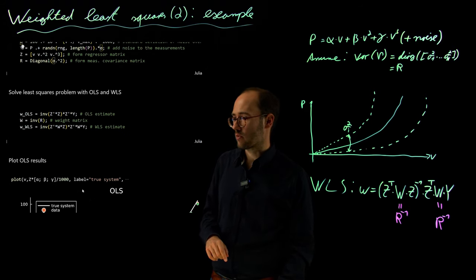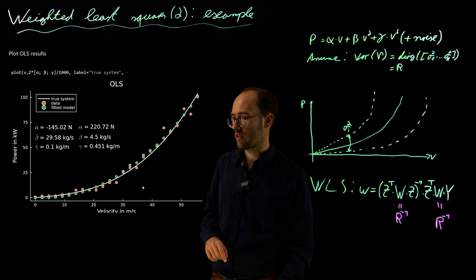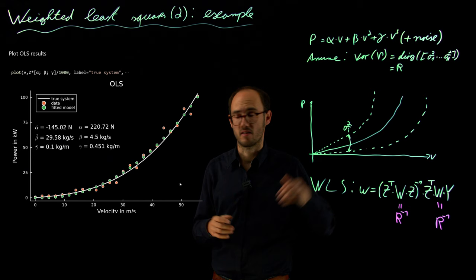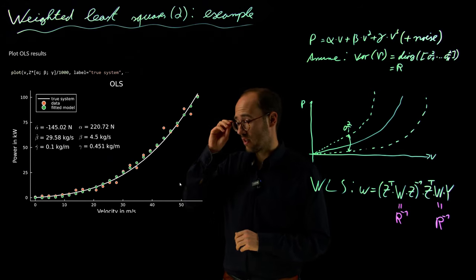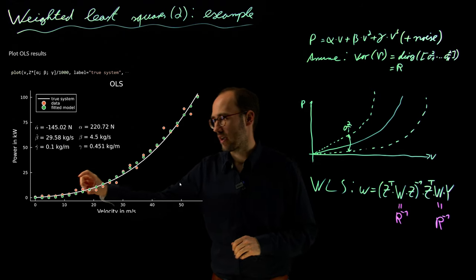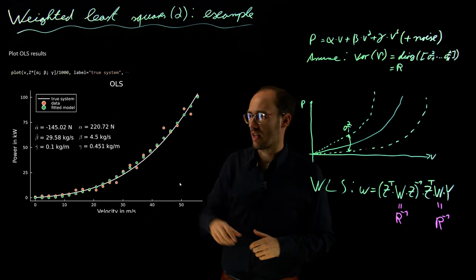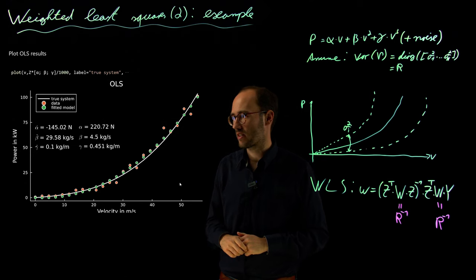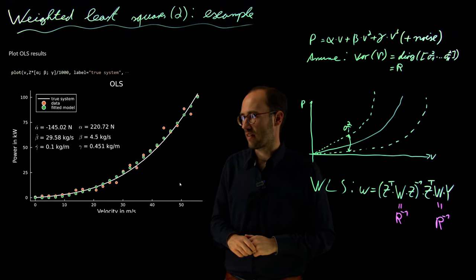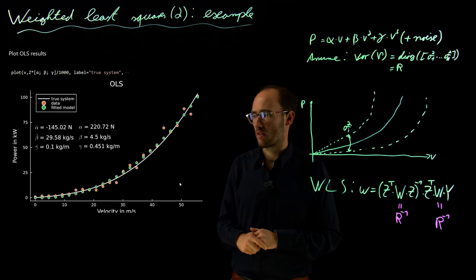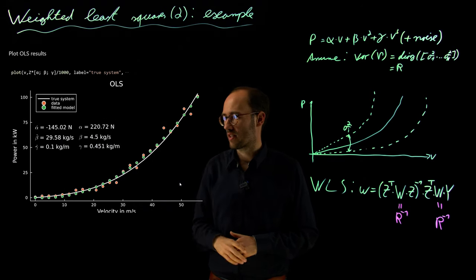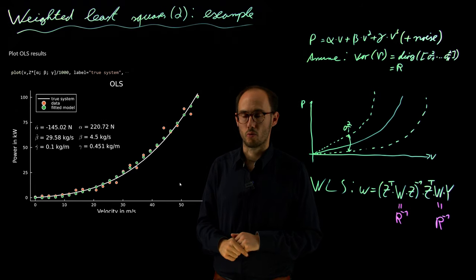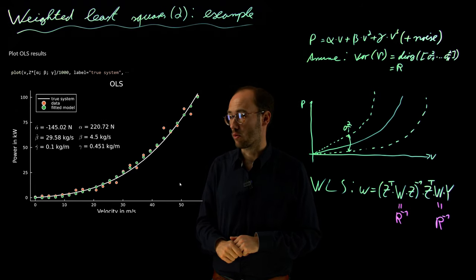If we then plot the results for the standard ordinary least squares where we basically ignore this noise spectrum, what we can see here from this plot is basically twofold. First of all, we see that the noise level is a little bit increasing over time. These are the red data points. And that if we apply this ordinary least squares fit to it, that the identified values of the parameters, this one here at the left, they are all significantly deviating from the true ground truth parameters. So there is a very huge deviation.